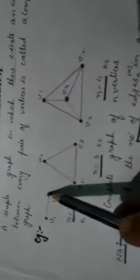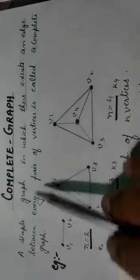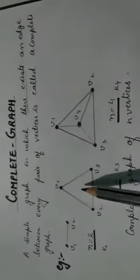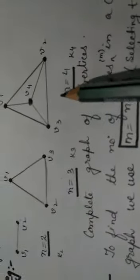Here we have 3 graphs in which we can see that there is an edge between every pair of vertices. A complete graph is a simple graph in which there exists an edge between every pair of vertices. Here 2 vertices and both are connected; here 3 vertices and there exists an edge between every pair; here 4 vertices and the same. So this is the example of complete graph.